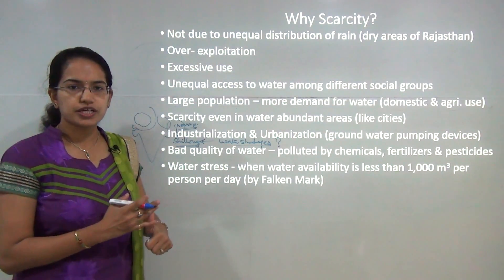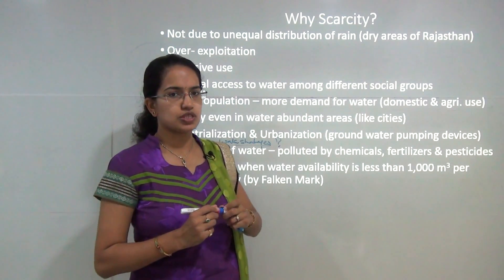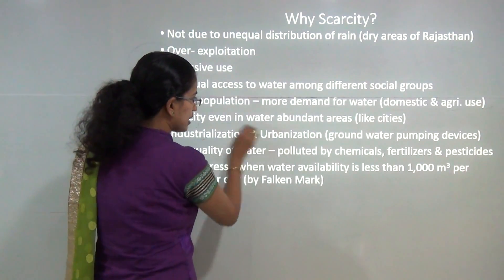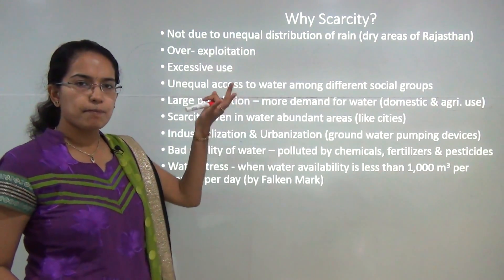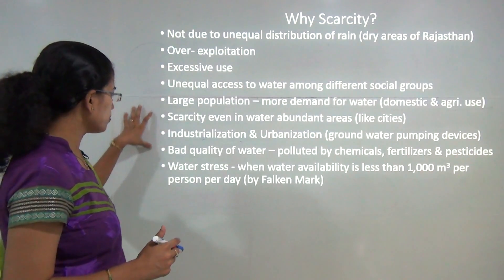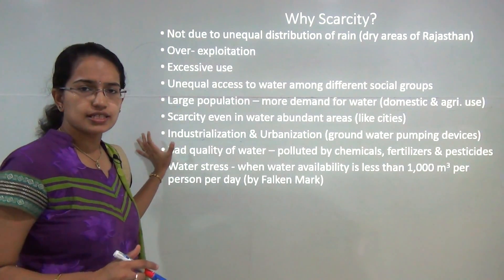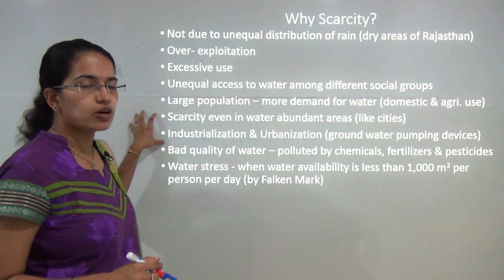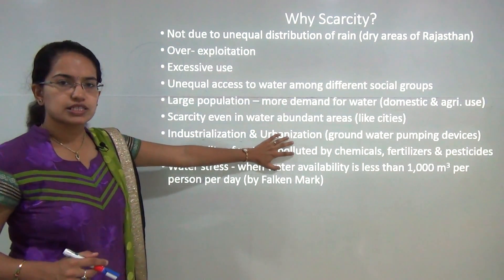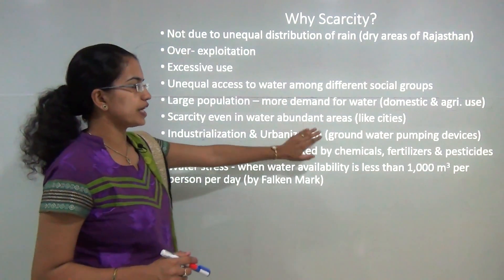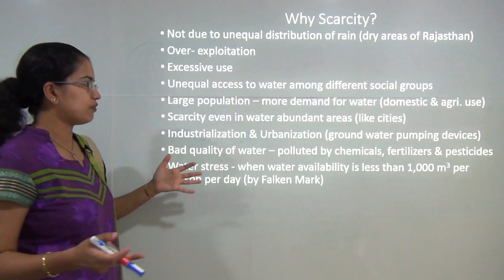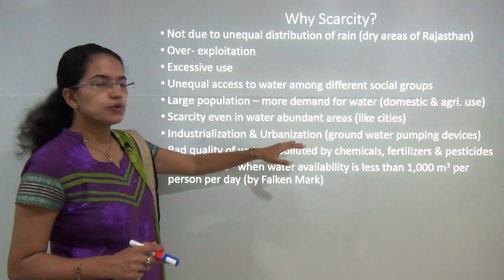The shortage is due to the following reasons: first, over-exploitation of resources; then excessive use with growing urbanization and industrialization. More water is used for industrial and urban activities. Ground water pumping devices extract ground water, creating gray zones in most areas. Most areas of Punjab, Haryana, and Northern Rajasthan are facing gray zone conditions because the water table level has gone deep. So water scarcity occurs not only in rainfall-deficit areas but also in areas of abundant rainfall, predominantly due to human intervention.